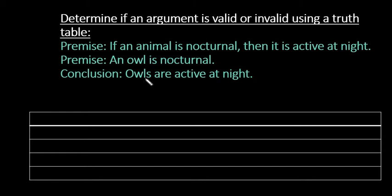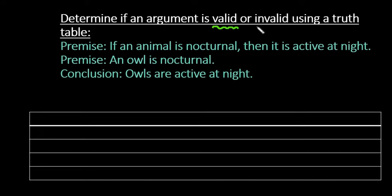For this video, what I want to do is show you how to determine if an argument is valid or invalid using a truth table. In order for it to be valid, at the end of your truth table when you've put the whole thing together, all of the statements must be true, or you must have a tautology. If there is any situation where you have a false statement in the final column, then it's an invalid argument.